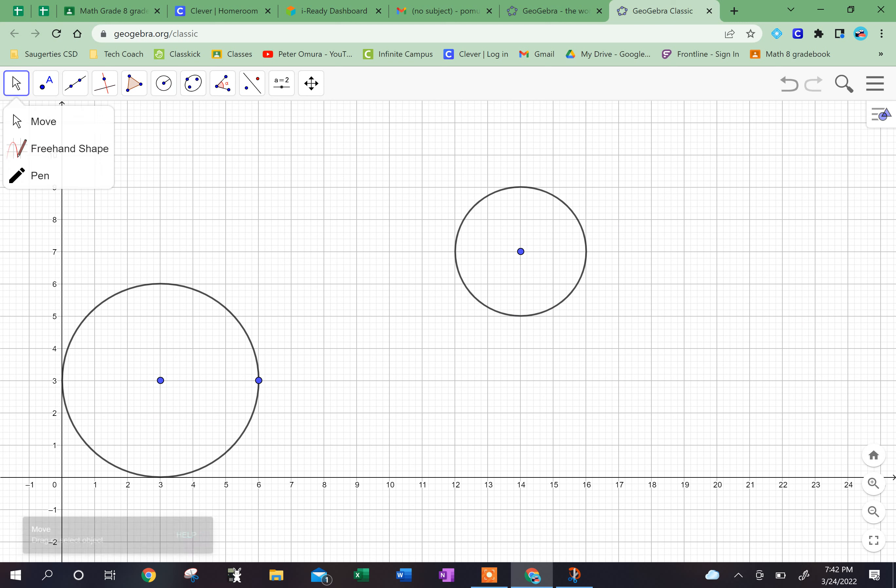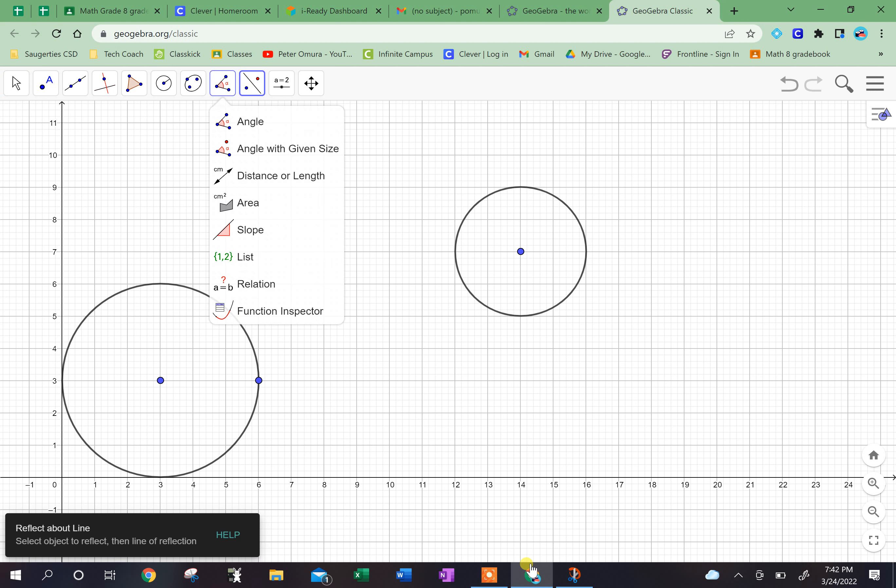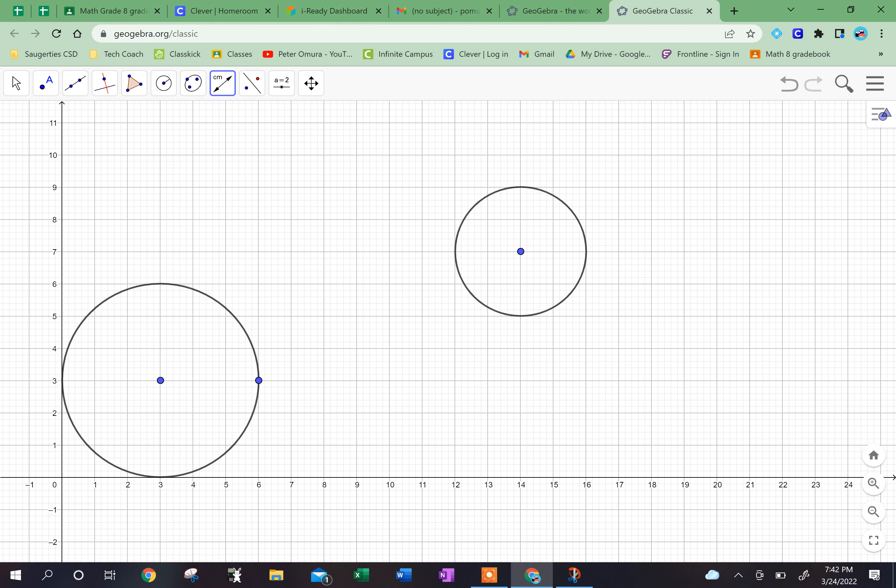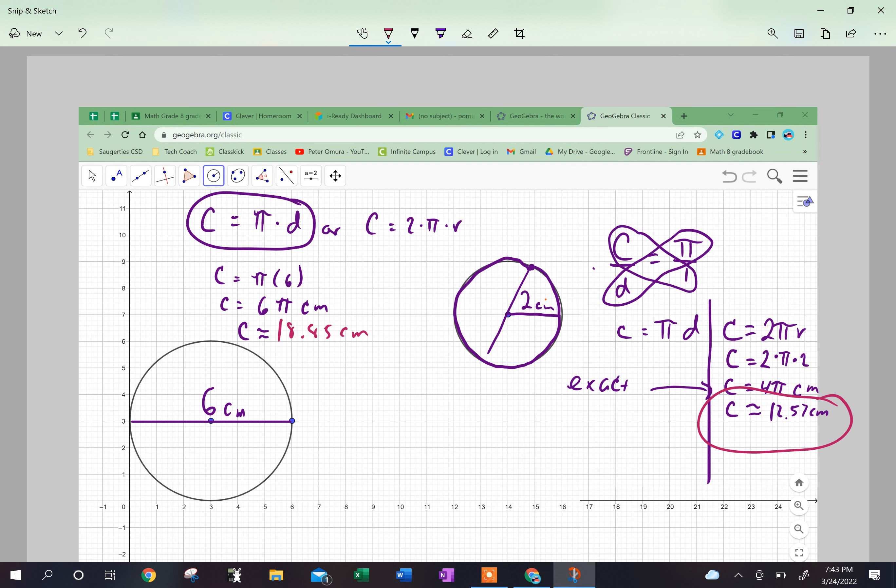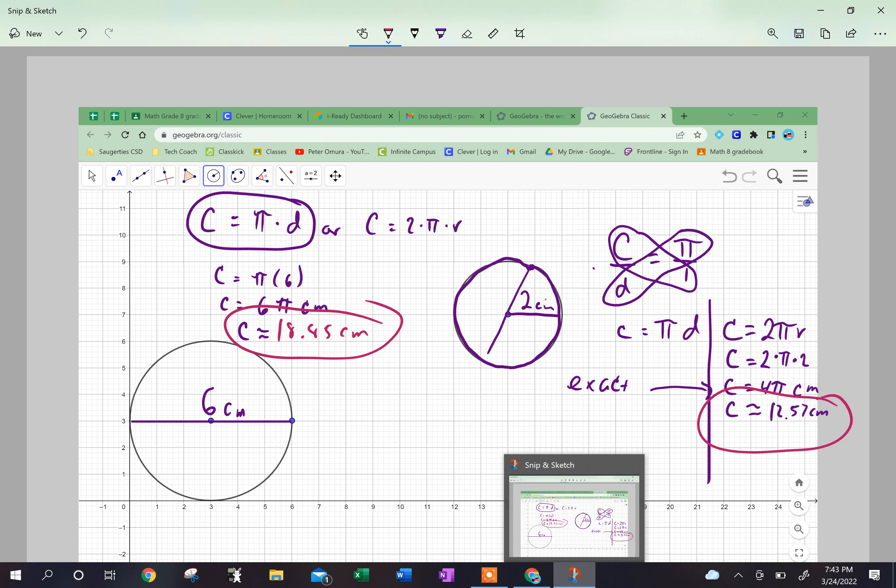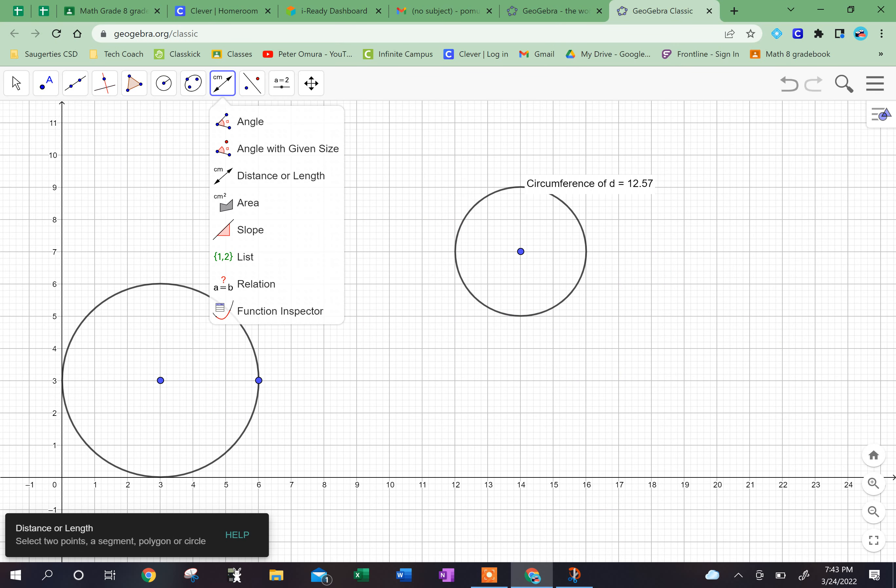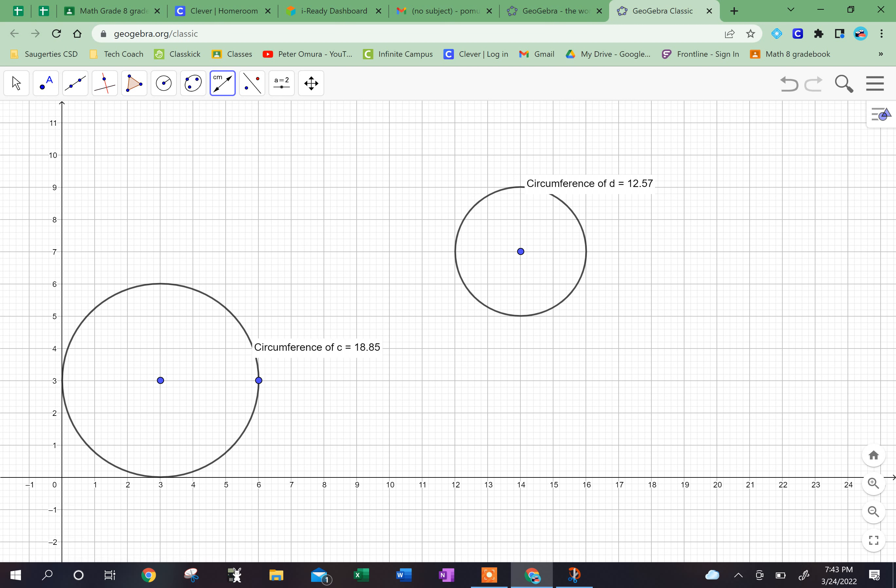Now if I go back to GeoGebra, which hopefully it's still up, the cool thing about this is if I go on to the circle and I press here, I can find the distance in centimeters, and it tells me that the circumference is 12.57. Well sure enough, that's what I had. If I go over here, my circumference should be 18.85.